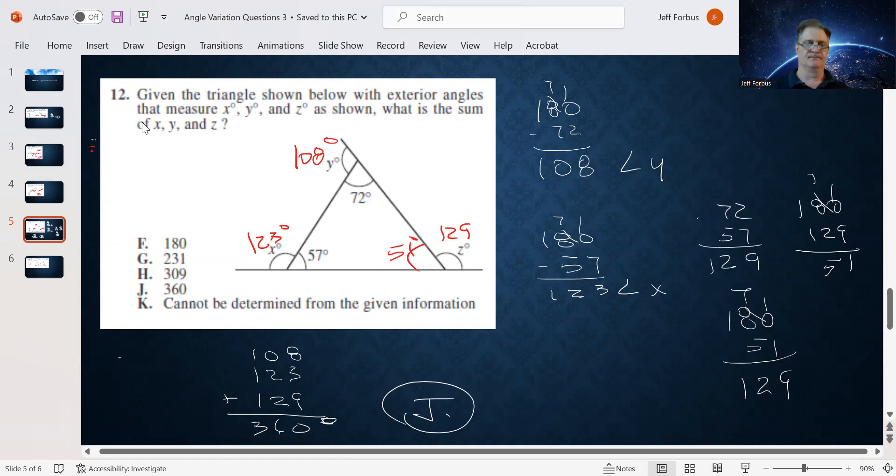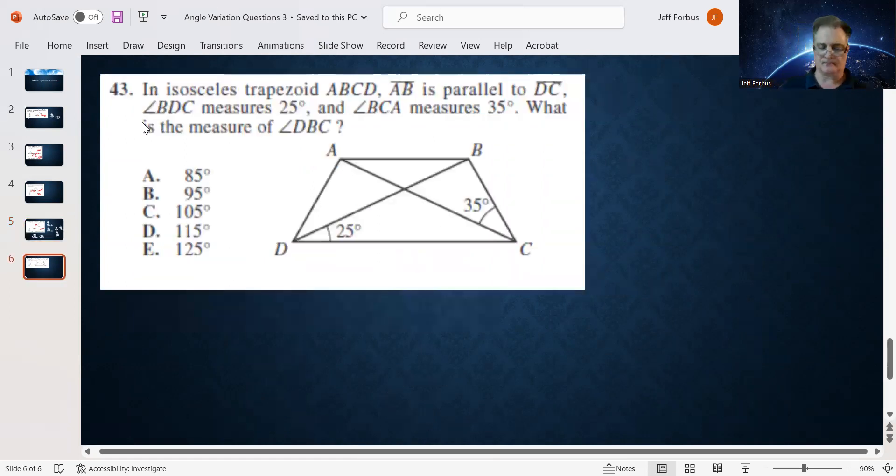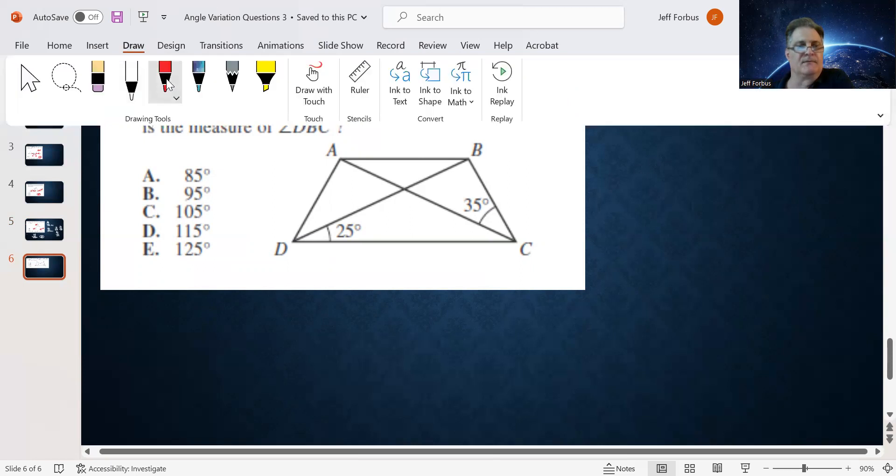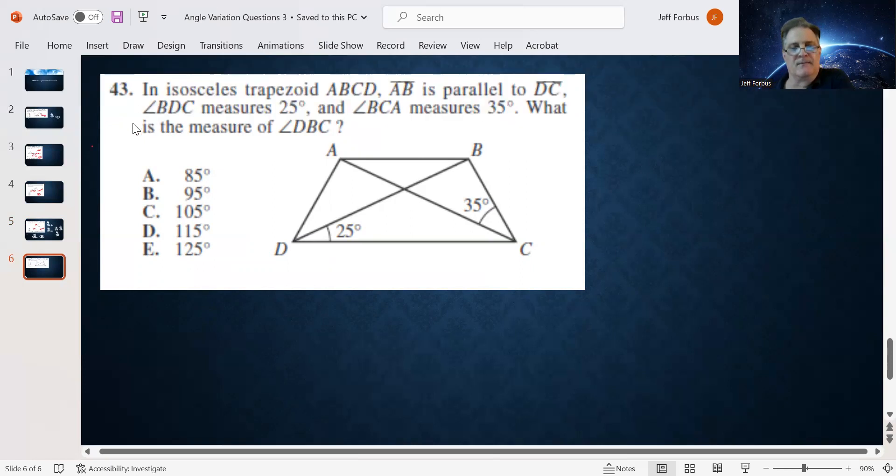One more. Now we got an isosceles trapezoid. That's important to know, isosceles. AB is parallel to DC. That's great. BDC measures 25 degrees. BCA measures 35 degrees. What is the measure of DBC? So we want to know what the measure is right here. We want to know what B is.